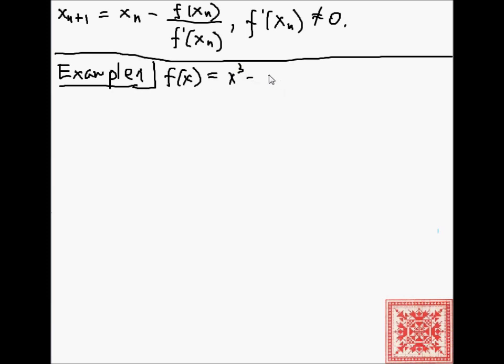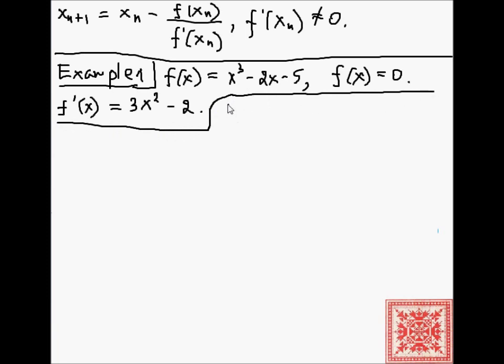Example 1. Let's consider this function f is equal to x cubed minus 2x minus 5. And we need to solve for this. Find the value of x such that f is equal to 0. Now, let's compute the derivative. If you know how to compute it, great. If not, then don't worry about it. All you need to do is just implement that derivative. 3x squared minus 2. That's the derivative of this function.